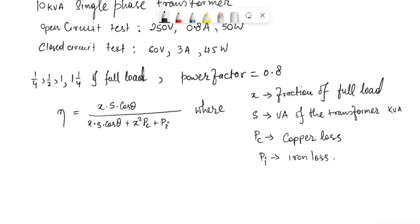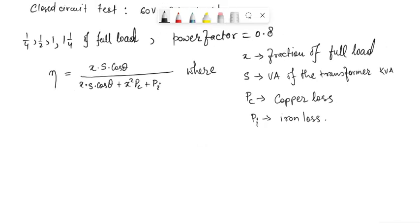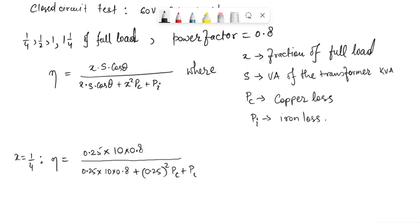We know that if the power factor is 0.8 then cos θ will be 0.8. So for x equals 1 upon 4, η equals 0.25 into 10 kVA into 0.8 divided by 0.25 into 10 into 0.8 plus 0.25 squared pc plus pi. We have to first calculate what pc and pi, the copper loss and iron loss, are.